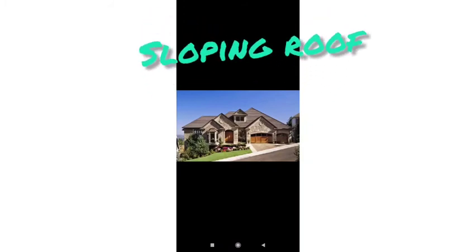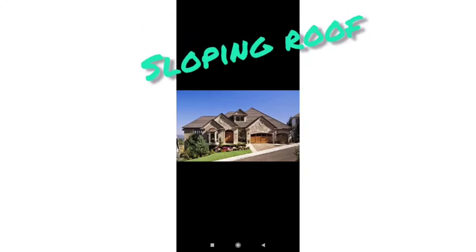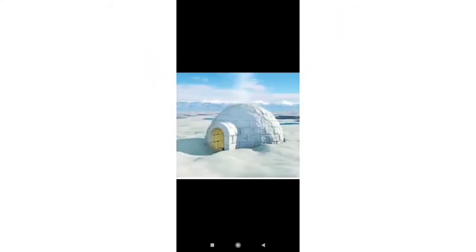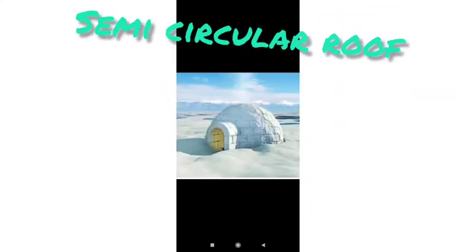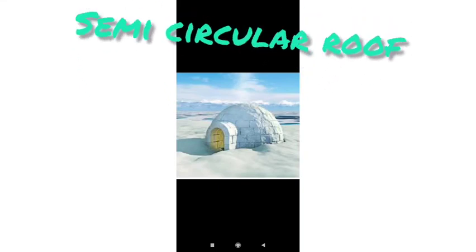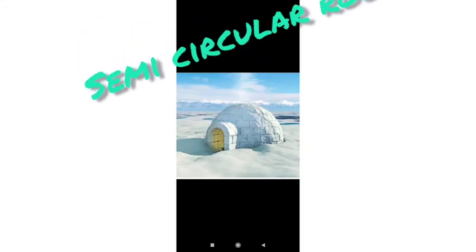The next kind of roof is the sloping roof. In hilly areas where there is heavy rainfall or snowfall, we have sloping roofs. The sloping roof allows water or snow to run off quickly. The third kind of roof is the semicircular roof. Igloos have semicircular roofs and such roofs allow snow to fall off immediately. So we have mainly three kinds of roofs: flat roofs, sloping roofs, and semicircular roofs. Thank you, class.